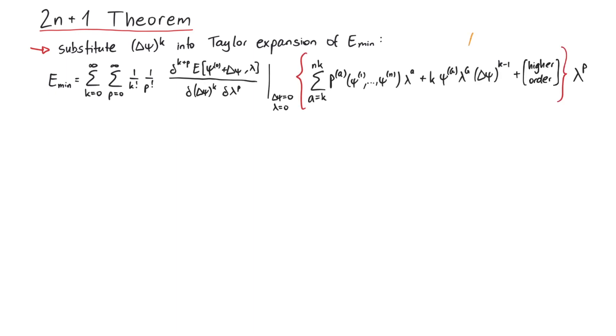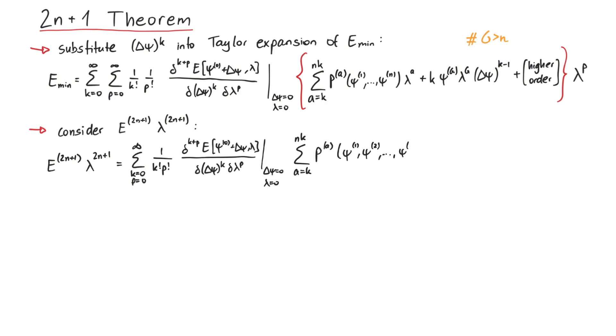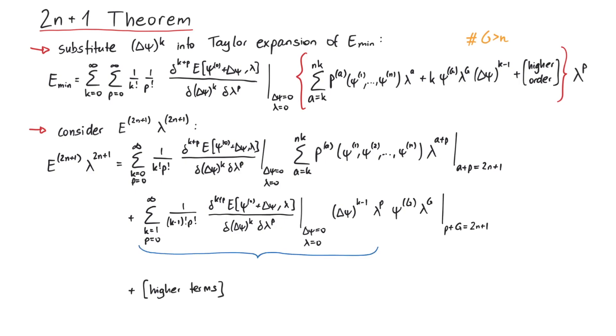Remember, we assume g to be greater than n. Next, we only consider the 2n+1 energy correction, which means that some values of our indices are constrained to yield the correct power of lambda. Furthermore, we can recognize the definition of fp in the second term. This means that all of those terms vanish, since all fp vanish.